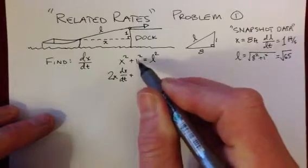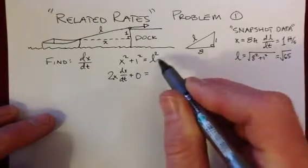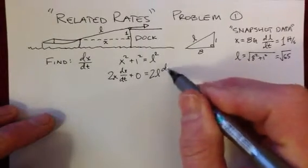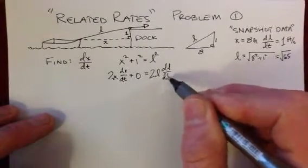Plus, well, the derivative of any constant number is zero. And then the derivative here with respect to time is the exact same thing, 2L dl dt.